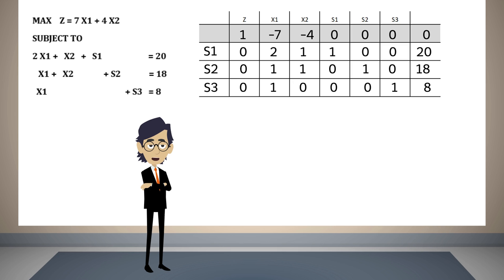We will try to increase the value of z by making x1 or x2 greater than zero. To know which of these two variables should increase, we observe the objective function row and search for negative numbers. If this is the case, we select the smallest of them. This means that x1 will be transformed into a basic variable and its value will be greater than zero. Now we must look for which basic variable x1 will substitute.